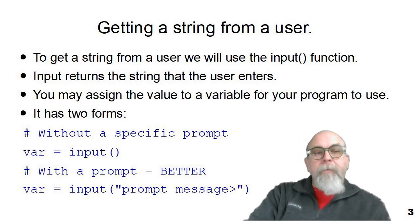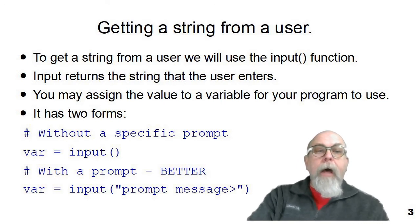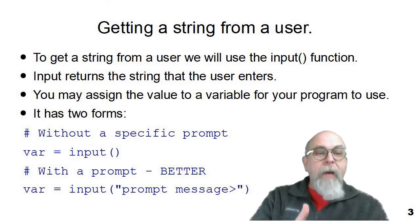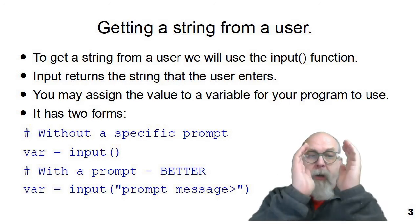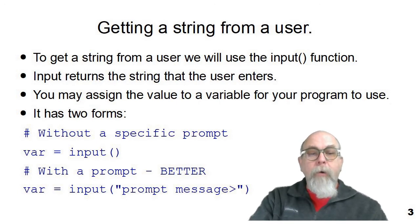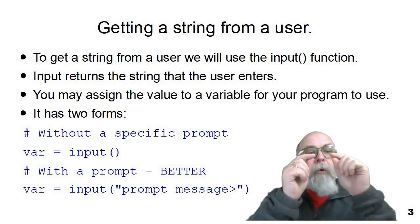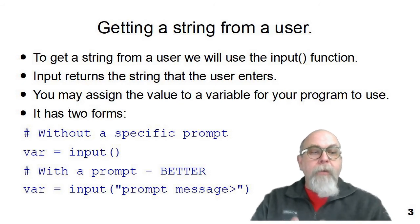Getting a string from a user. To get a string from a user, we use the input function in Python. Input will return the string that the user actually enters. You may assign the value that input returns to a variable so your program can use it. There are two forms of input: one without a prompt — just input with open and close parentheses — which will display nothing but stop the program and ask the user to input something. Or you can put a prompt in the parentheses, which will print in whatever development environment you're using and encourage the user to type something in. I always suggest using the prompt.